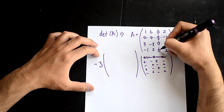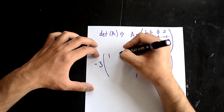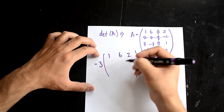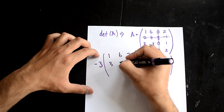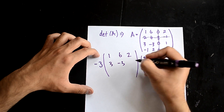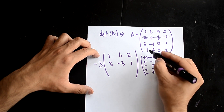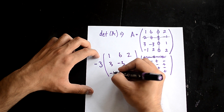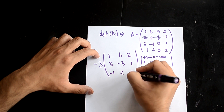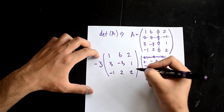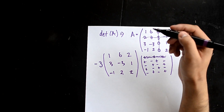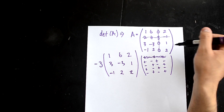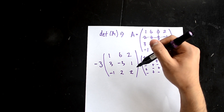You draw a line all the way through it and then you get a 3 by 3 matrix: 1, 6, 2; then 3, -3, 1; then 1, -1, 2. So now we've changed this 4 by 4 matrix into a 3 by 3 matrix.